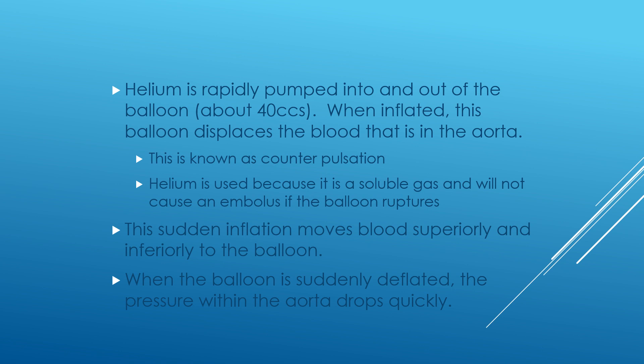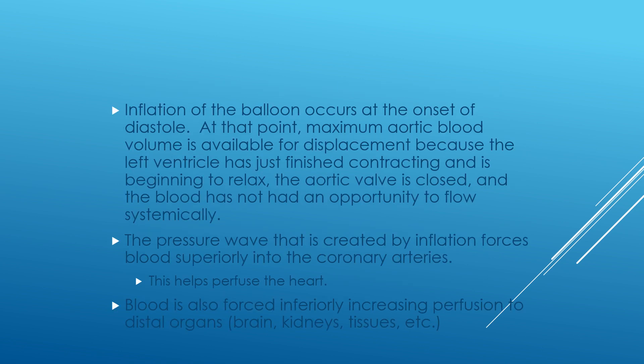When the balloon is suddenly inflated, it displaces the blood in the aorta — this is known as counterpulsation. This sudden inflation moves the blood superiorly and inferiorly. When the balloon is suddenly deflated, the pressure within the aorta drops quickly. Inflation of the balloon occurs at the onset of diastole, when the maximum aortic blood volume is available for displacement because the left ventricle has just finished contracting and is beginning to relax. The aortic valve is closed and blood has not yet had an opportunity to flow systemically. The pressure wave created by the inflation forces blood superiorly into the coronary arteries, helping perfuse the heart. Blood is also forced inferiorly, increasing perfusion of distal organs like the brain, kidneys, and tissues.